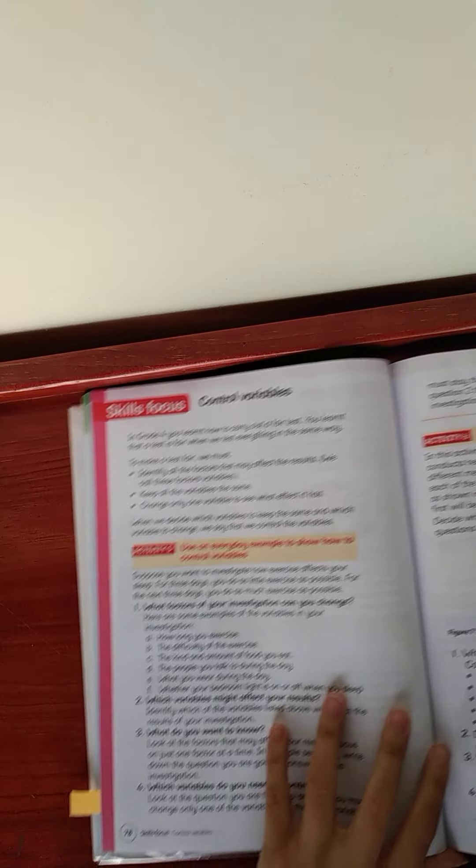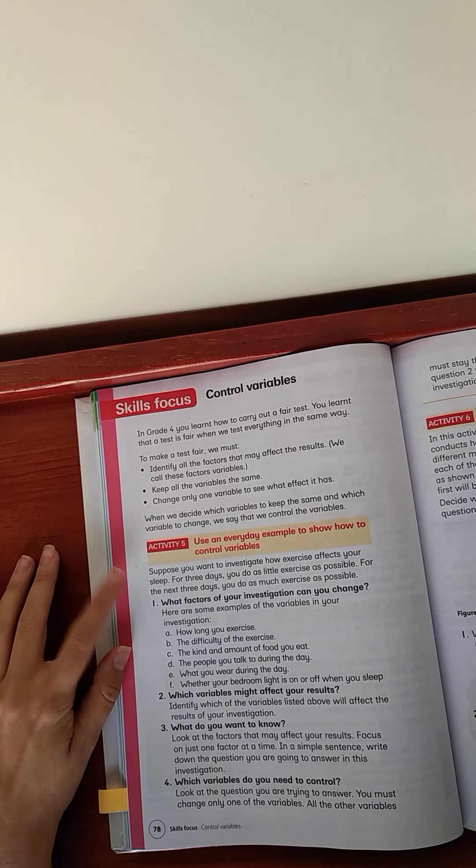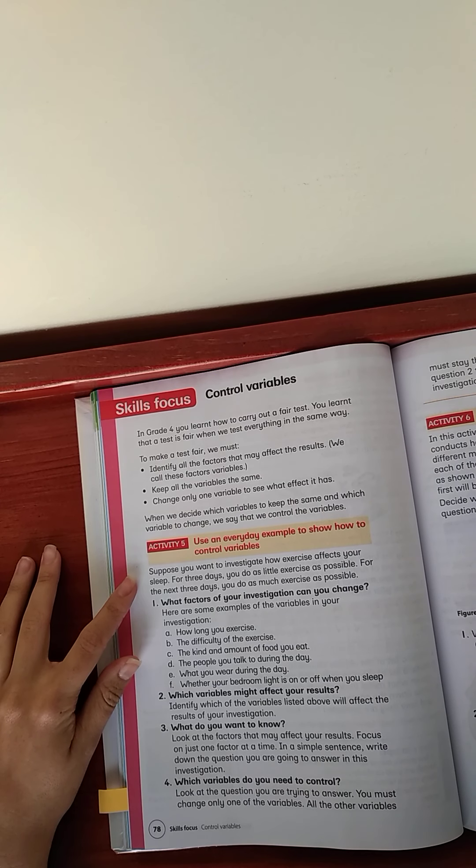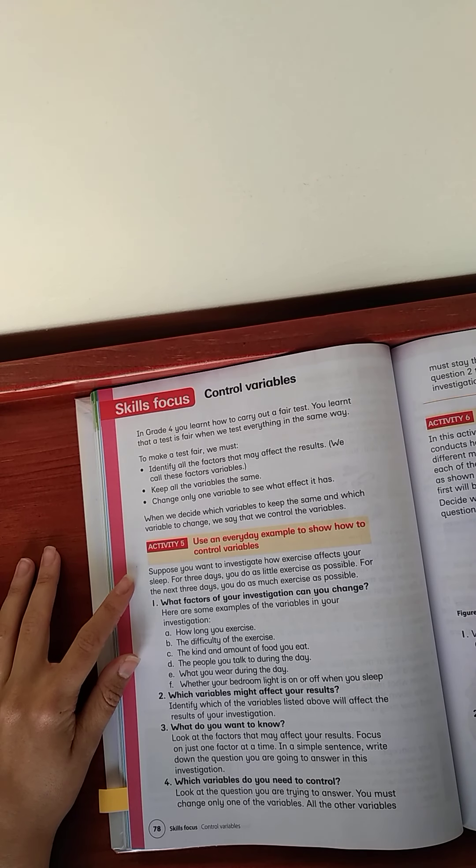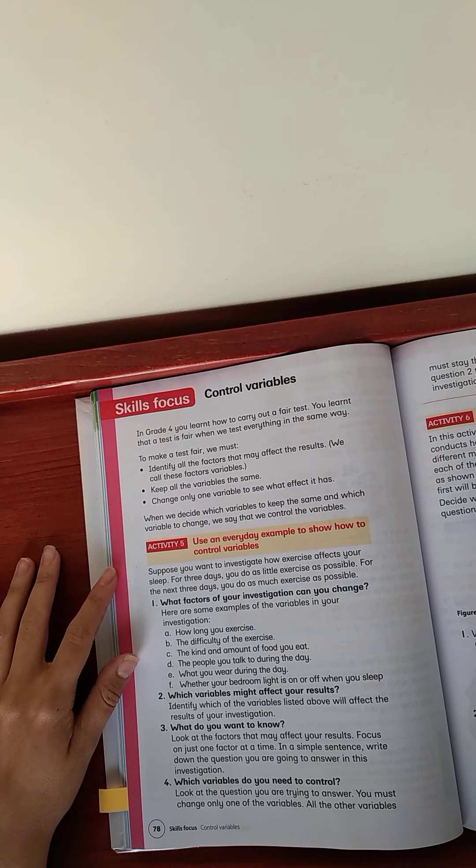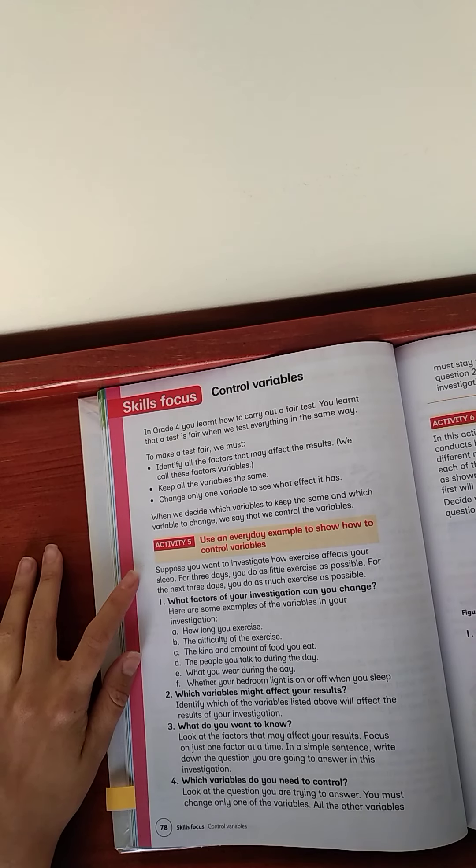Now, let's quickly go to skill focus. This is the last thing we have to do. Activity five. Control variables. In grade four, you learned how to carry out a fair test. You learned that a test is fair when we test everything in the same way. To make a test fair, we must identify all factors that may affect the result. We call these factors variables. Keep all the variables the same. Change only one variable to see what effect it has. When we decide which variable to keep the same and which variable to change, we say that we control the variable.